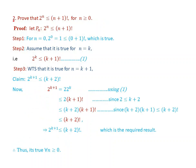Example number 2: Prove that 2 to the power of n is less than or equal to (n+1) factorial, for n greater than or equal to 0. The given proposition P(n) is: 2 to the power of n is less than or equal to (n+1) factorial.